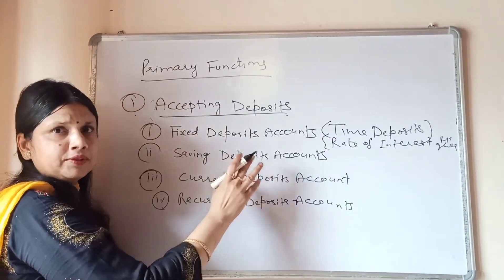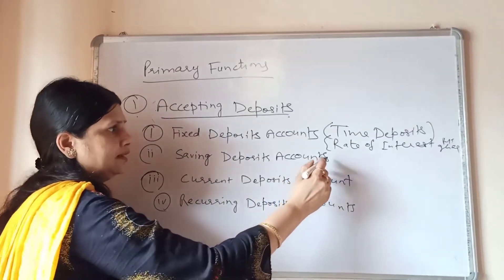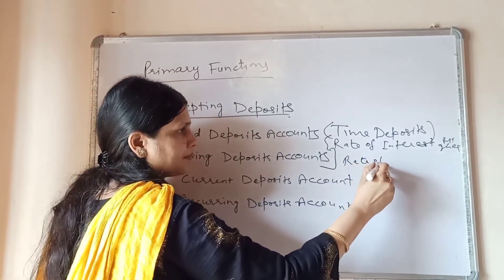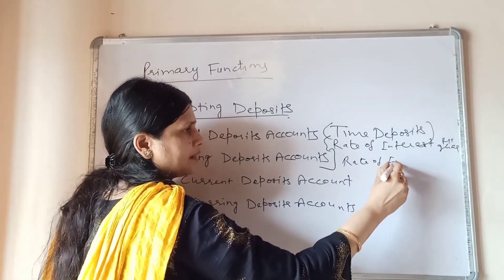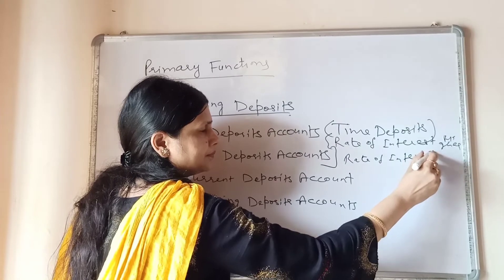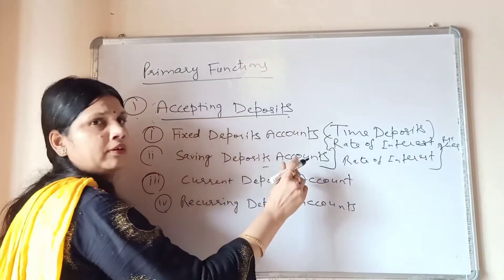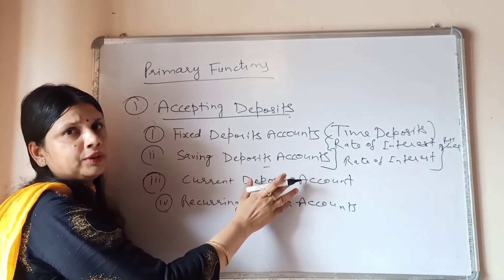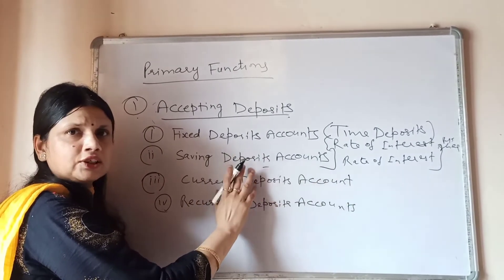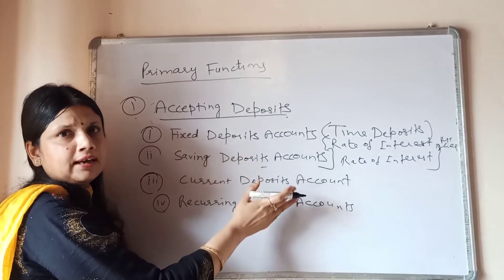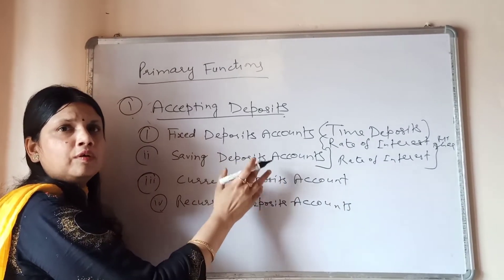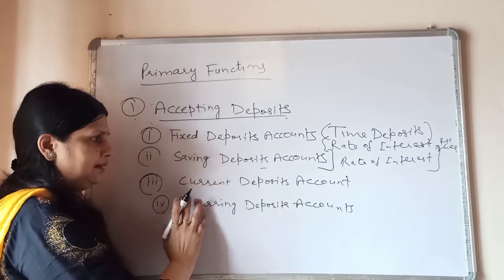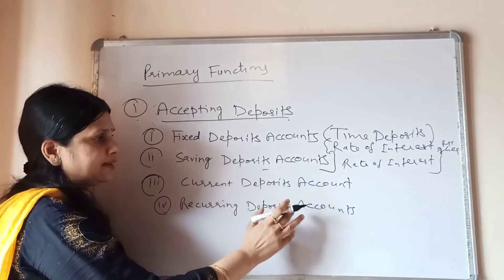The second type is a saving deposits account. The rate of interest on this account is quite low, and the number of transactions is limited. You can do only three or four transactions in a week.